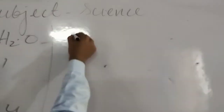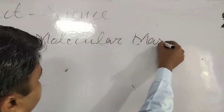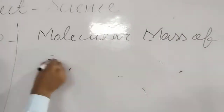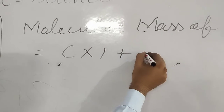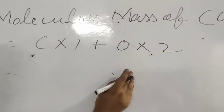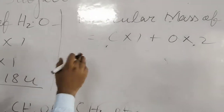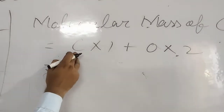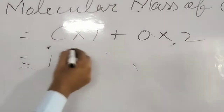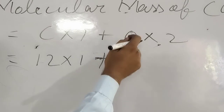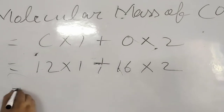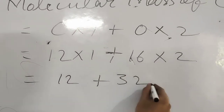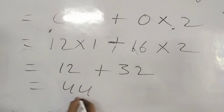Now, molecular mass of carbon dioxide, CO2. Again, you will do the same. Carbon is one, oxygen is two. The atomic mass of carbon is 12, and the atomic mass of oxygen is 16, so two oxygens give 32. So here you write 12 and here you write 32. The answer is 44 U.